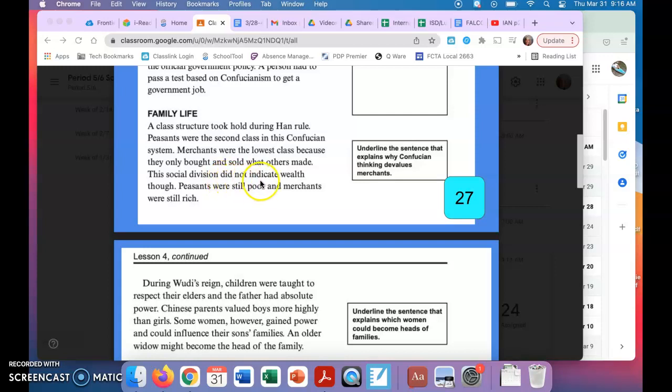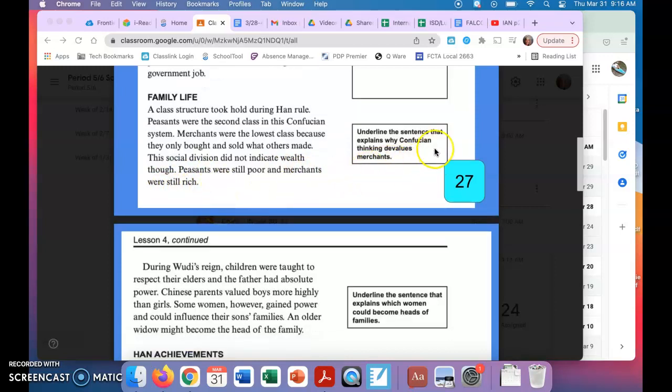This social division did not indicate wealth though. Peasants were still poor and merchants were still rich. Again, you're looking for the sentence that explains why Confucian thinking devalues merchants.